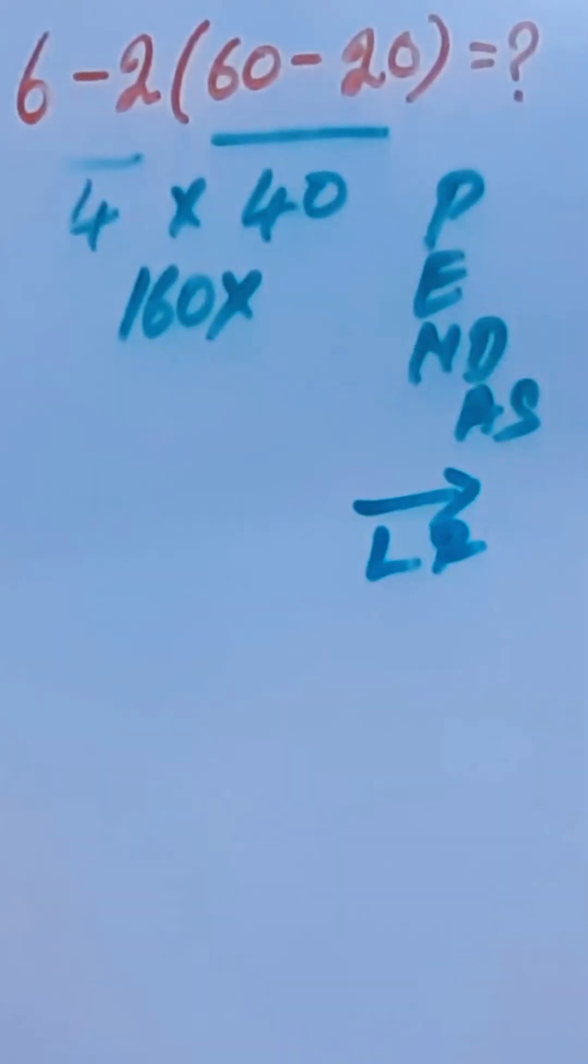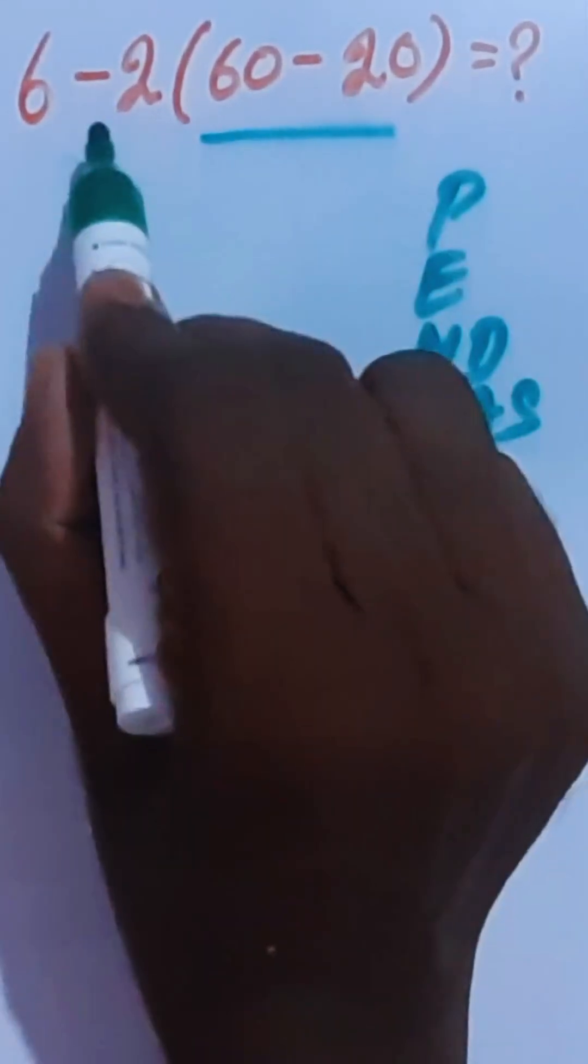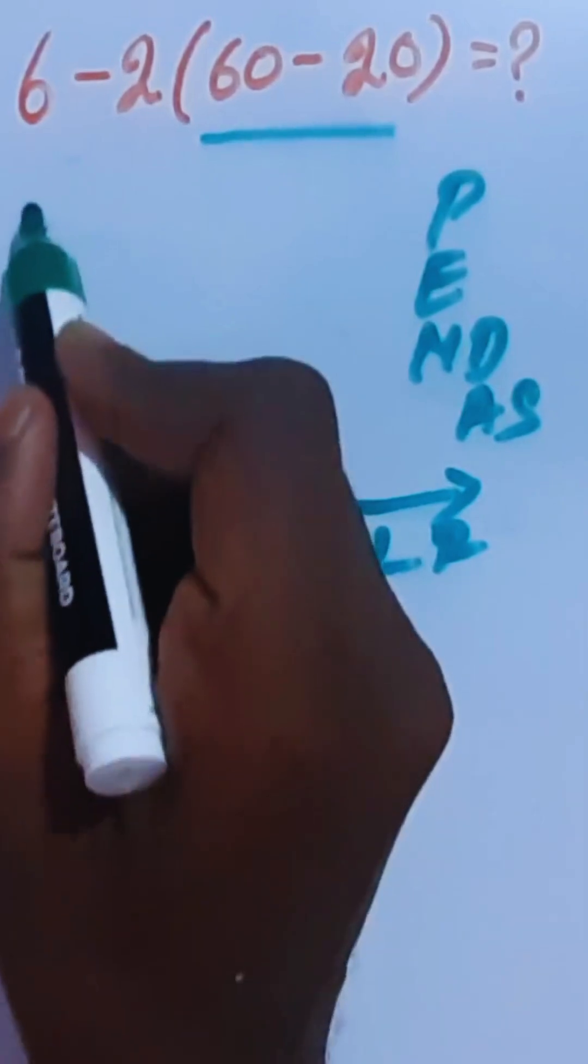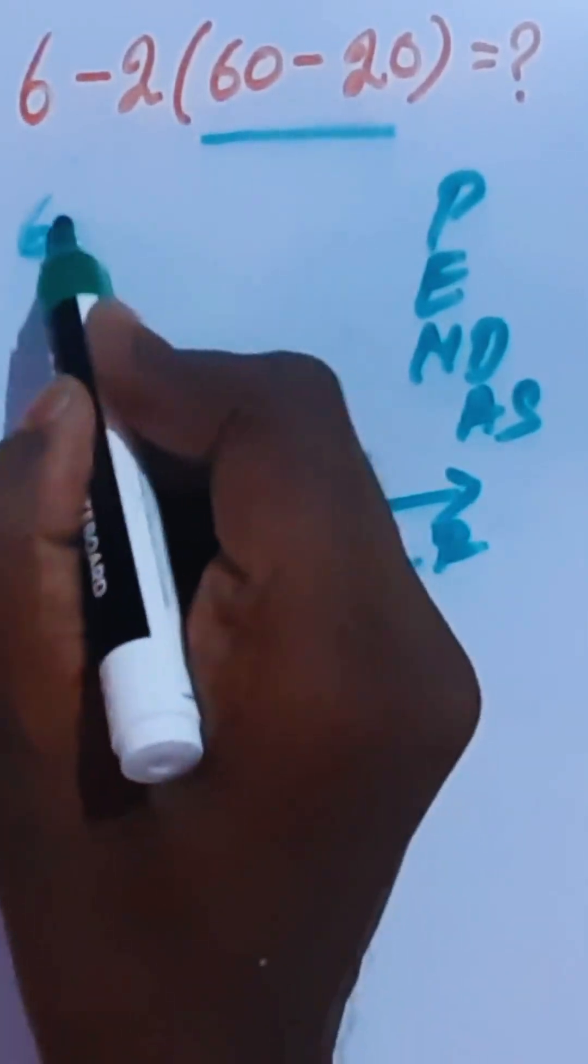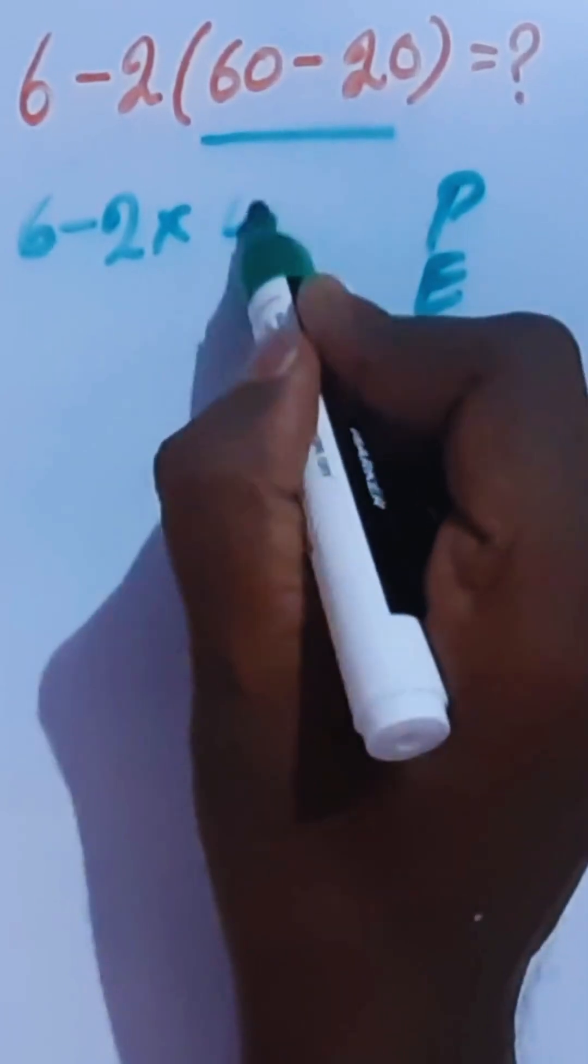To solve this problem, we have to do this bracket before the subtraction. So 6 minus 2 times, this is 40.